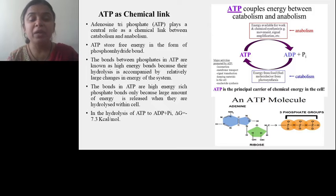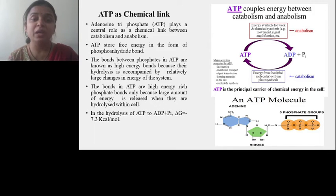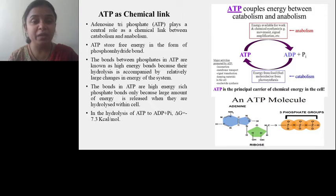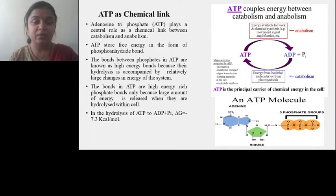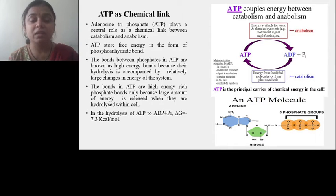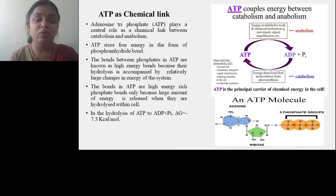First we will discuss ATP as a chemical link. ATP stands for adenosine triphosphate. It plays an important and central role as a chemical link between catabolism and anabolism. ATP stores free energy in the form of phosphoanhydride bonds. The bonds between the phosphates in ATP are known as high energy bonds because their hydrolysis is accompanied by relatively large changes in energy of the system. That is why ATP can act as an energy currency which mediates energy from one molecule to another or from one system to another.